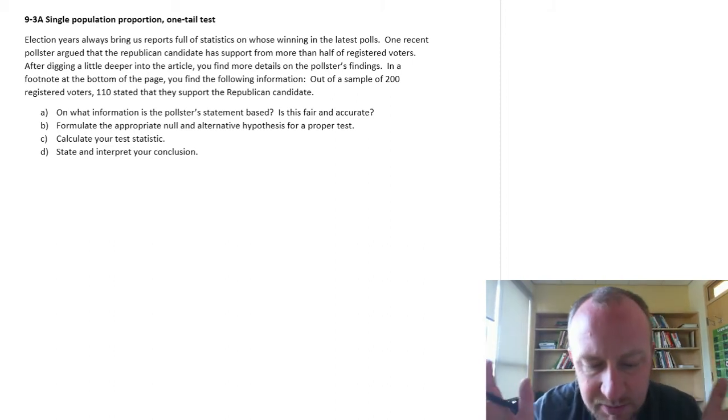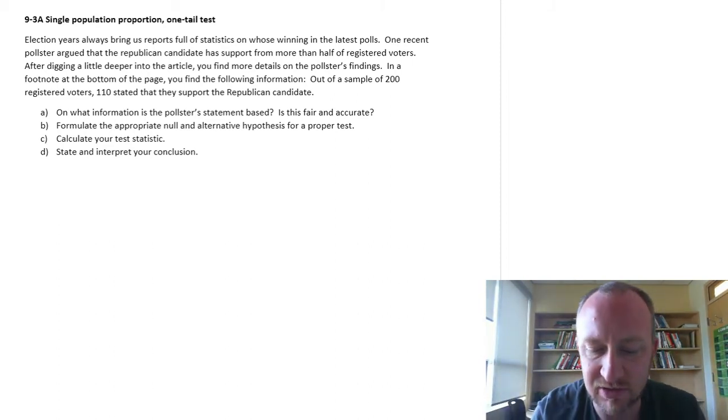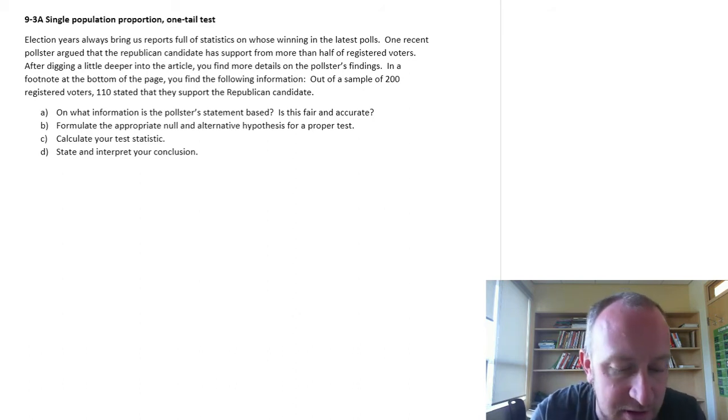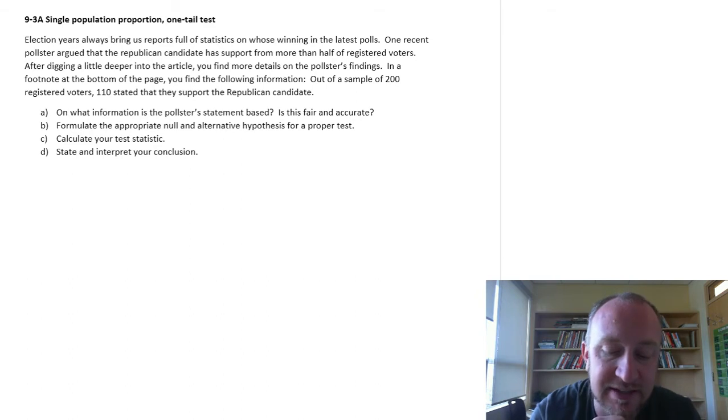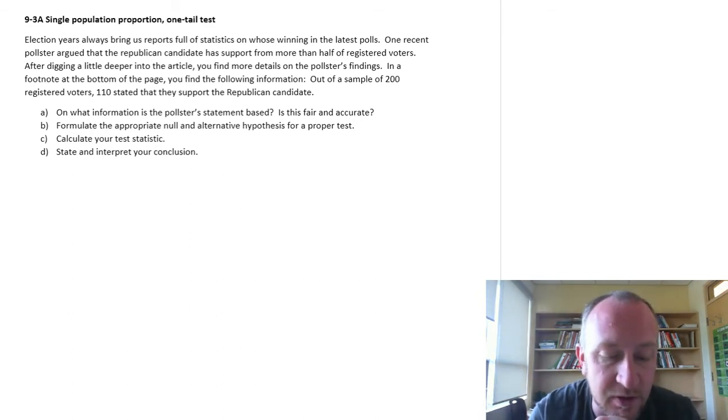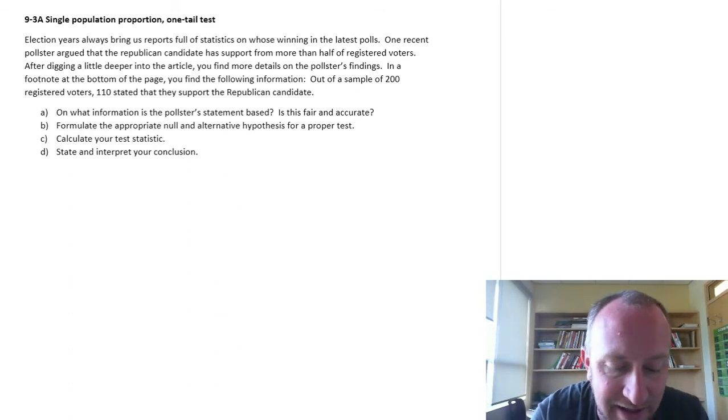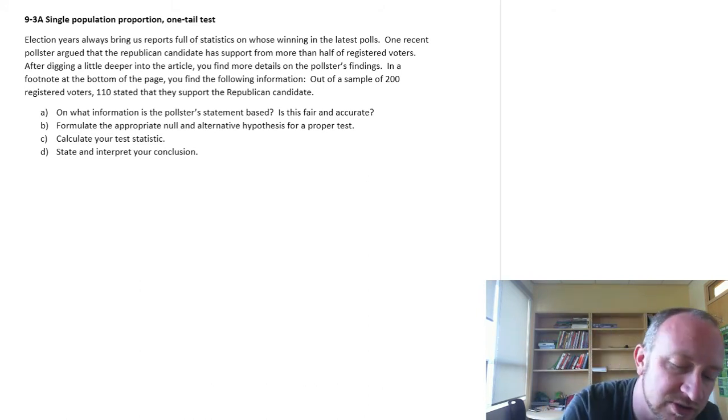So election years always bring us reports full of statistics on who's winning in the latest polls. One recent pollster argued that the Republican candidate has the support from more than half of the registered voters. After digging a little deeper into the article, you find details on the pollster's findings. In the footnote, you find the following information. Out of a sample of 200 registered voters, 110 stated that they supported the Republican candidate.